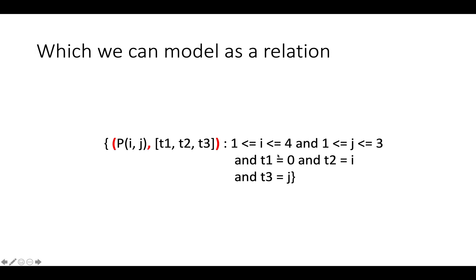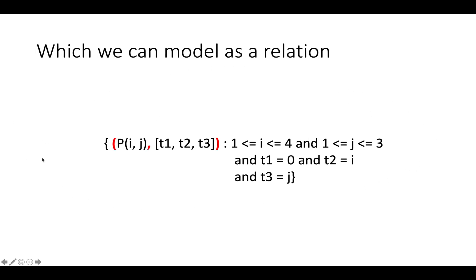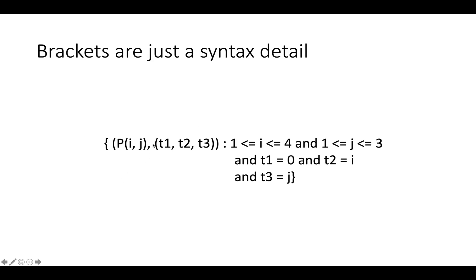And actually we can think of this as a relation. So we were writing this as a function from one two-dimensional space to a three-dimensional space, we can actually think of this whole expression as expressing a set of pairs where the left hand side is the domain of the function and the right hand side is the range of the function. These brackets are actually just a notational syntax detail, so to make things more uniform we can think of this as a map from pairs i and j in the domain space P to 3D tuples that represent time, so we've just made the notation a little bit more uniform.